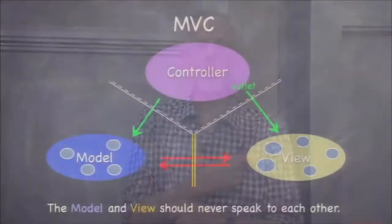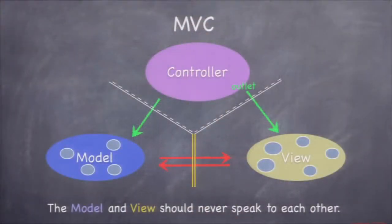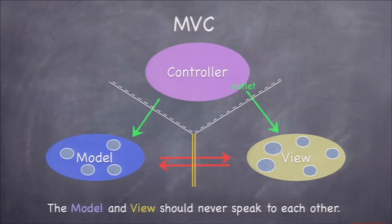What about model to view? Never. The model is completely UI independent, so there's absolutely no way it could talk to a view object. View objects are fundamentally UI objects. Similarly, since view objects are generic, they can't talk to any specific model — they need a controller to interpret the model for them. That's why it's a double yellow line — there's fire, never go across that line.